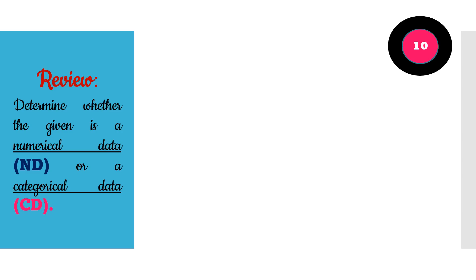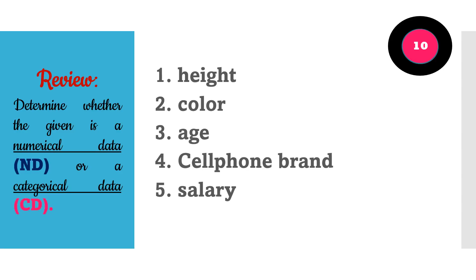Before we start with the discussion, let me check if you can still recall our previous lesson on data collection. For our review, I want you to determine whether the given is a numerical data or a categorical data. If you think it is numerical, type ND in the comment section or write it on your paper. If it is categorical data, write or type CD. I hope the instruction is clear as I give you 10 seconds to do the activity.